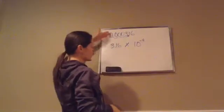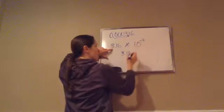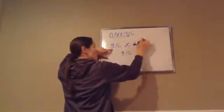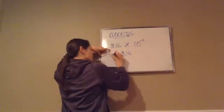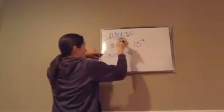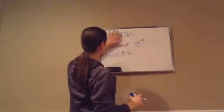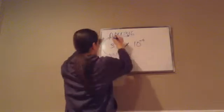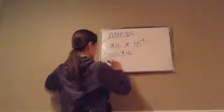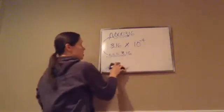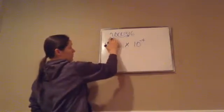Let's check it to see if we were right. 3.16 times 10 to the negative 4 means I move my decimal 4 times to the left: 1, 2, 3, 4. Is that my original standard number? 0.000316 — yes, it matches. So we are correct, and 3.16 × 10⁻⁴ is the scientific notation form of that number.